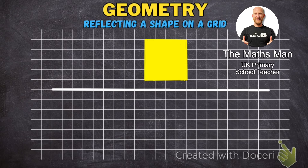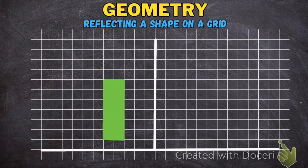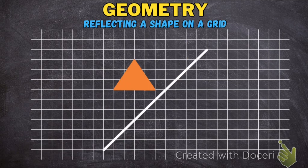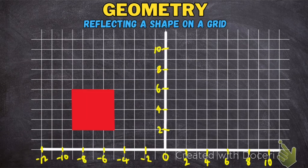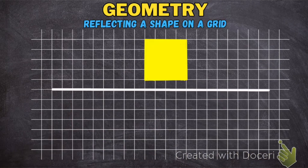Hi everyone and welcome to the Mathsman YouTube channel. In this video today we're going to be looking at a geometry objective: how to reflect a shape on a grid. This video is going to start with me showing you how to reflect a shape on a grid, including how to do it if there's a diagonal line, and then at the end we're going to look at two questions you might come across in an exam and how to solve them. But let's start with actually how to reflect a shape on a grid.